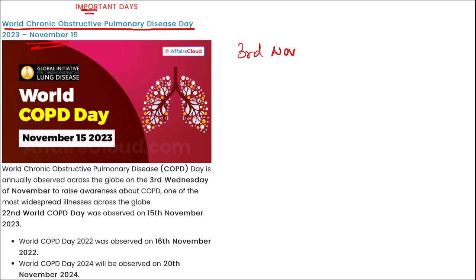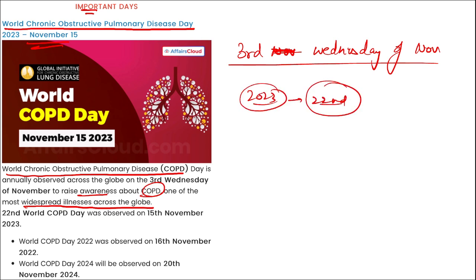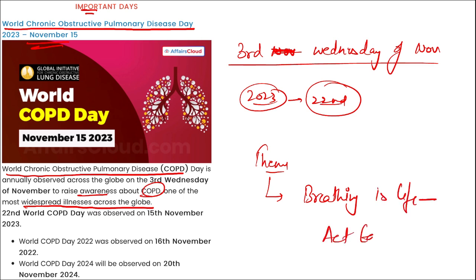World Chronic Obstructive Pulmonary Disease Day is observed on the third Wednesday of November each year. In 2023, it was observed on 15th November. It is observed to raise awareness about this disease, which is one of the most widespread illnesses across the globe. The theme for World COPD Day 2023 is: 'Breathing is Life — Act Earlier.'